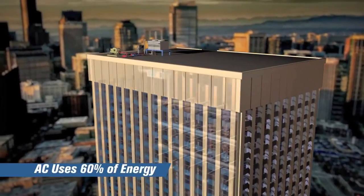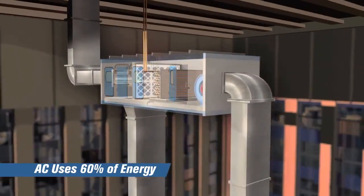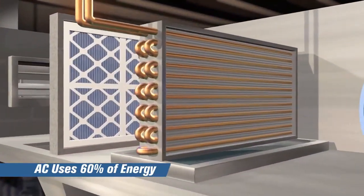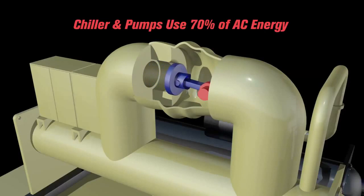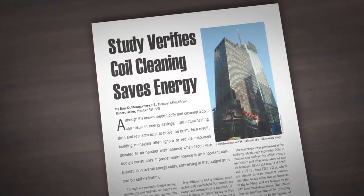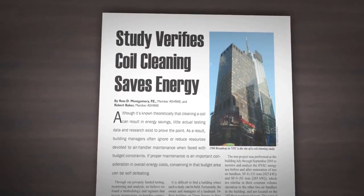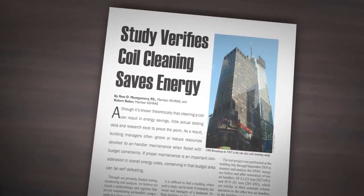In a typical office building, the AC system uses 60% of the building's energy, and of this, the chiller and pumps consume 70%. The 2006 ASHRAE published study estimated savings of 15 to 30% from clean coils.